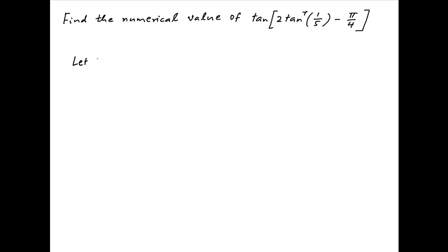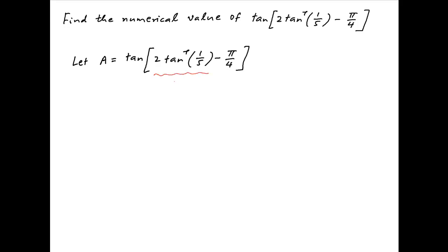Let's denote the given expression by a, so a is equal to tan of 2 times tan inverse of 1 upon 5 minus π upon 4. Now let's replace 2 times tan inverse 1 upon 5 with θ.